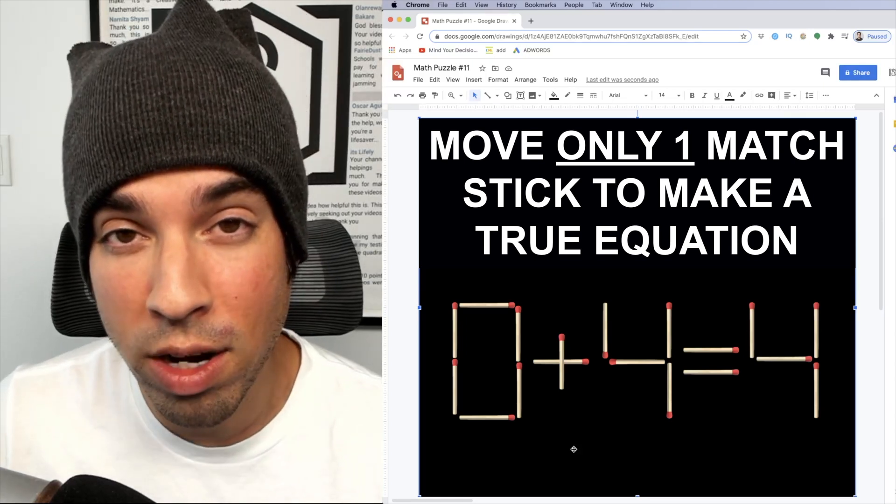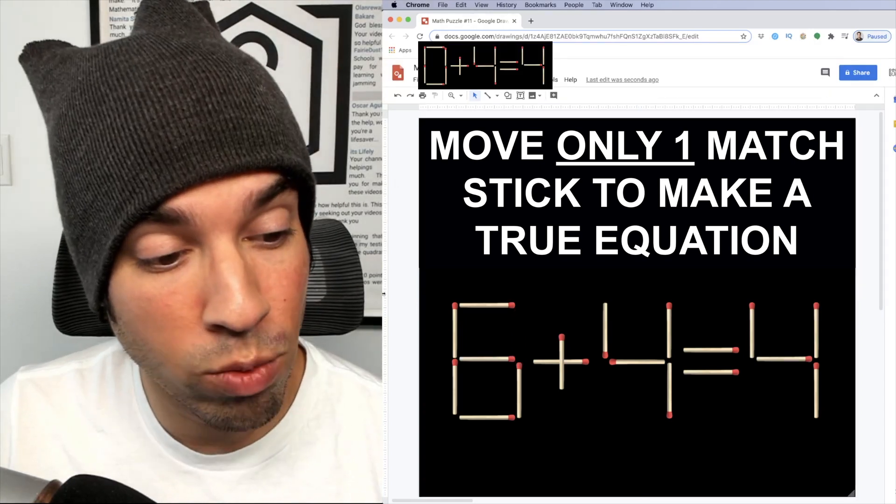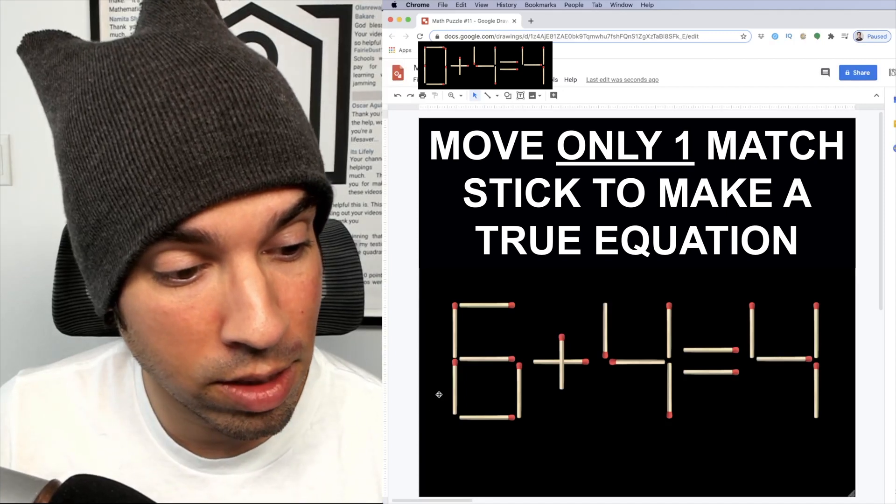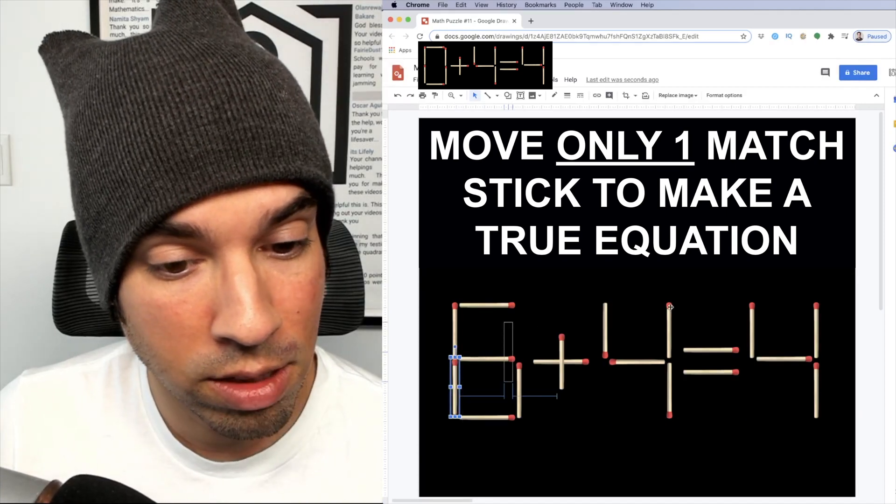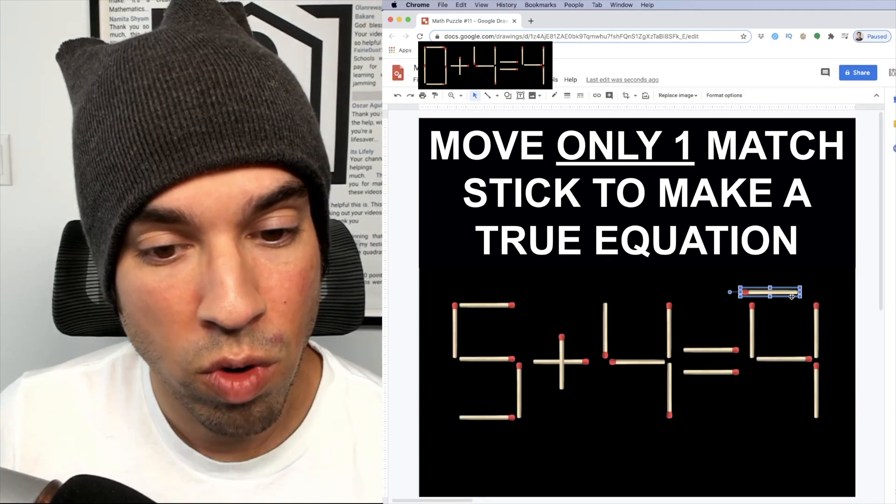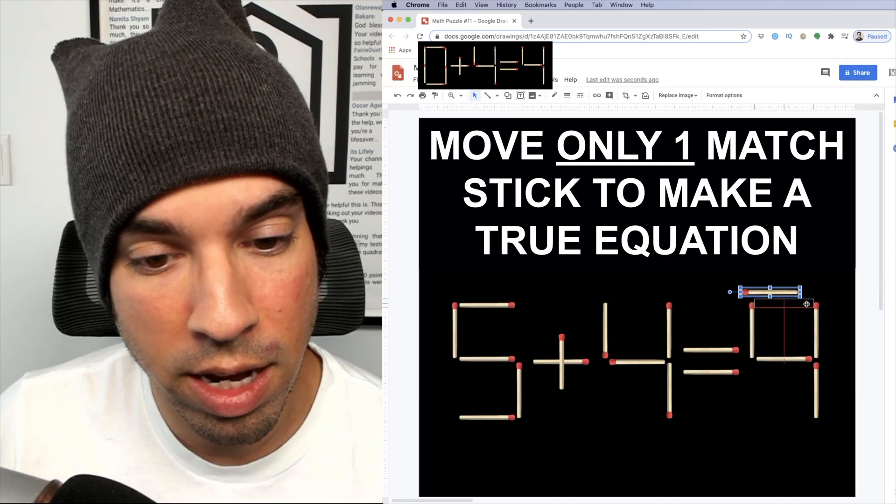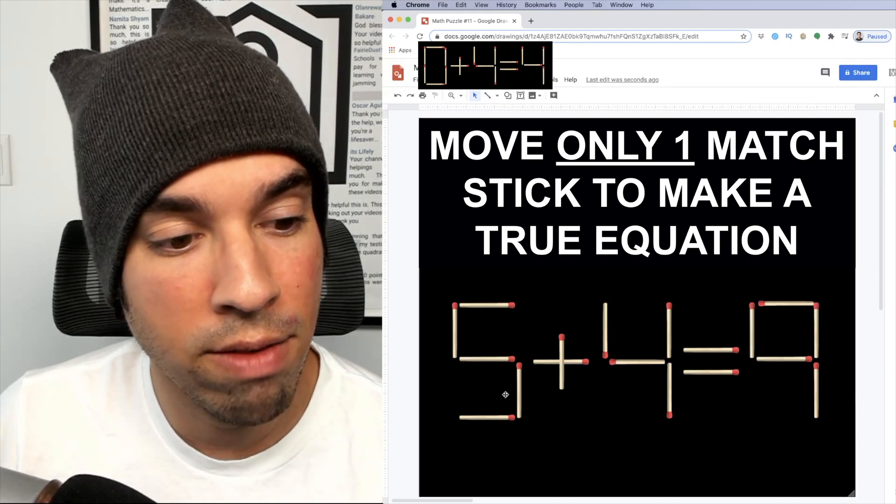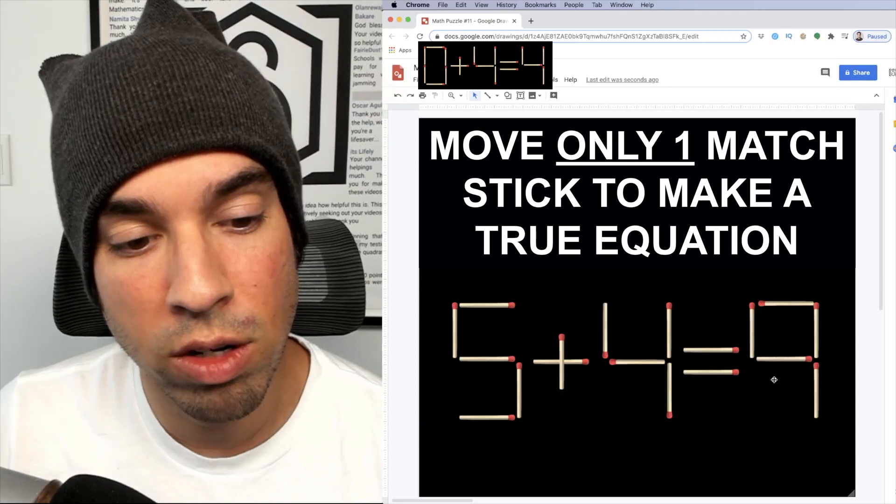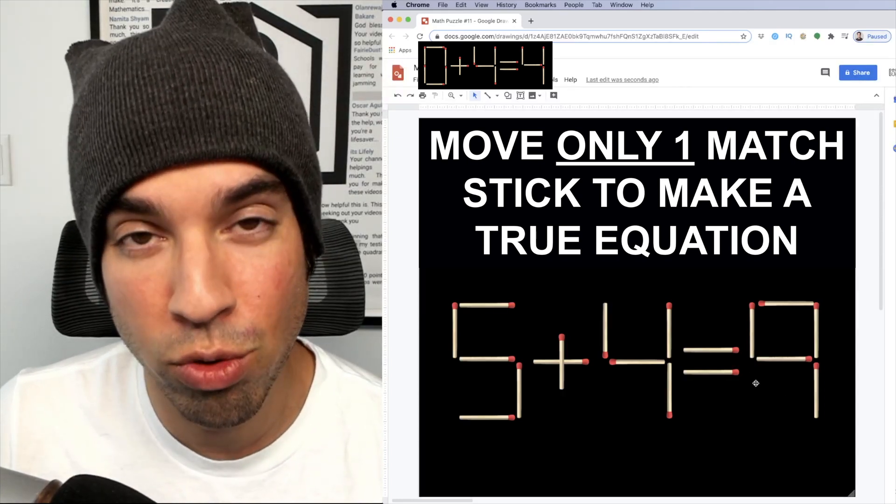For solution number two, again, we're gonna move something from the six over here. I'm gonna take this top piece, bring it here, rotate it and place it like so. And what do we have here? We have five plus four equals nine. So that is solution number two.